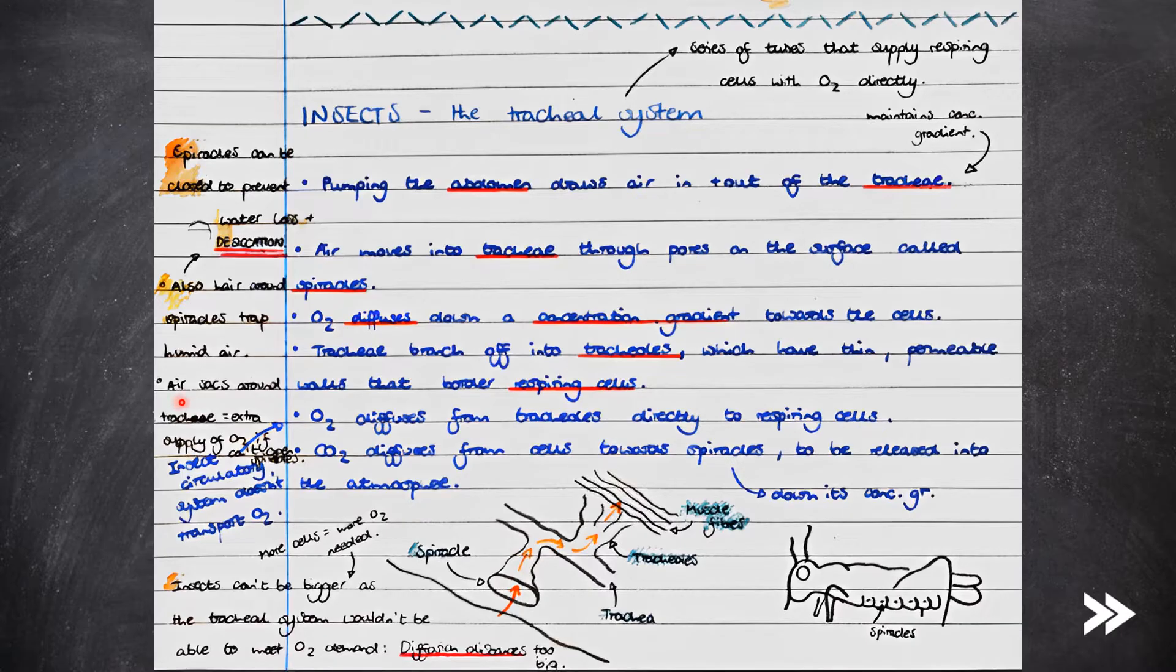There are also air sacs around the tracheae to provide an extra supply of oxygen if the spiracles have to be closed for a longer period of time for some reason. Insects can't be bigger, as the tracheal system wouldn't be able to meet the organism's oxygen demand. This is because a bigger organism would require more oxygen due to the presence of a larger number of cells, which all need oxygen for aerobic respiration, yet the diffusion distances would be much larger, and therefore it would take far too long for oxygen to reach respiring cells by diffusion.